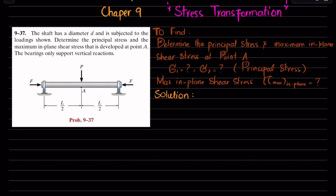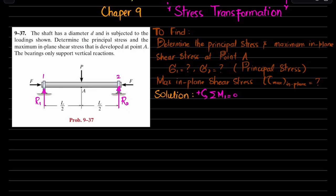First step: when you remove each support you will have a vertical reaction. Let this be point 1 and point 2, so the reactions will be R1 and R2. We'll find R1 and R2 using equations of equilibrium. The first equation is: sum of all moments about point 1 is equal to 0, taking counterclockwise moment as positive. About point 1, the first moment is produced by load P with perpendicular distance L/2, and this is clockwise so it will be negative.